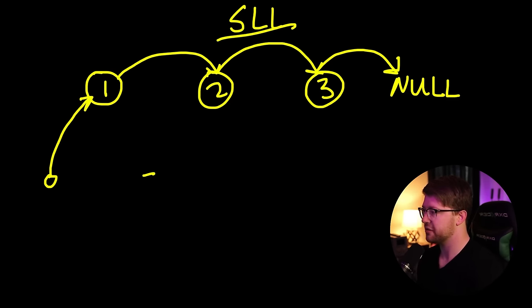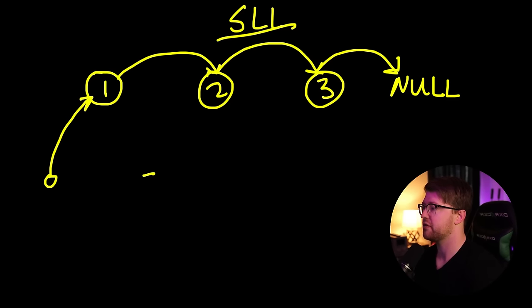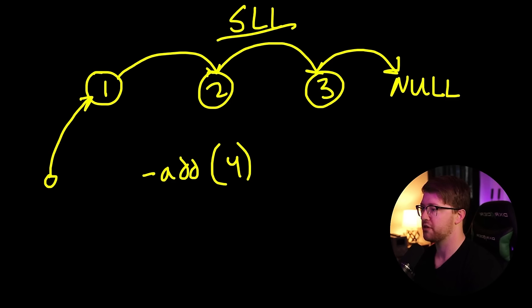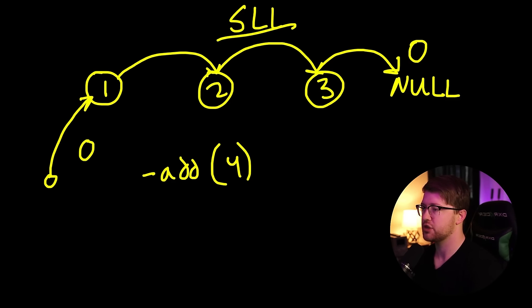There are a bunch of different operations you can do on a singly linked list. The first is you can add a node to the list. We could either do an append at the end, which is an O(N) operation where we navigate through the entire list to get to the end, or we can add to the front. We'll show how both work in C.